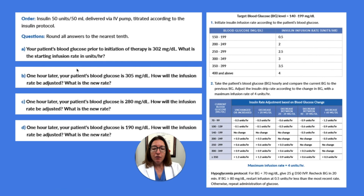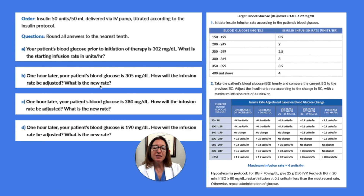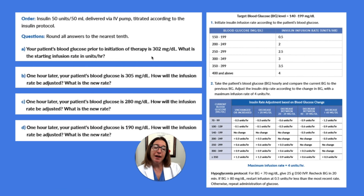Part B says: one hour later, our patient's blood glucose is 305. How will the infusion rate be adjusted and what is the new rate? You can see our blood glucose actually went up — it went from 302 to 305.